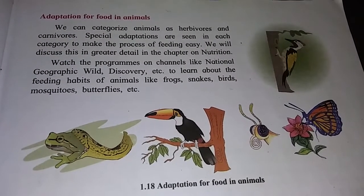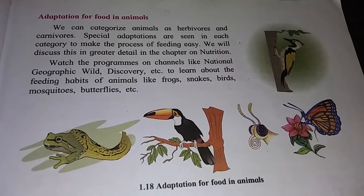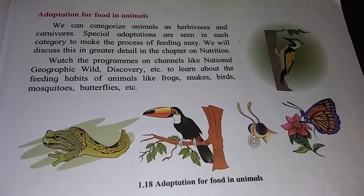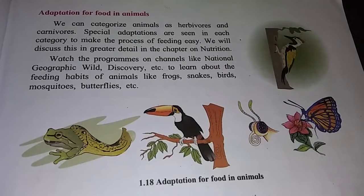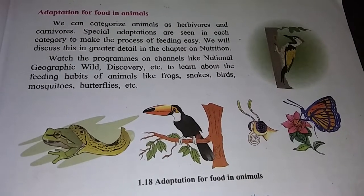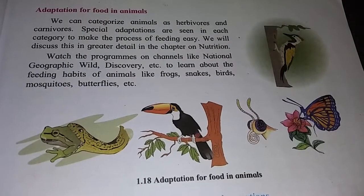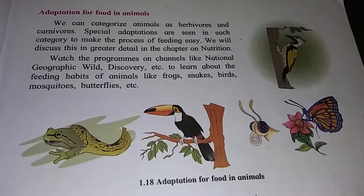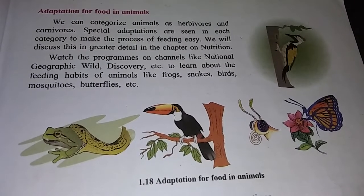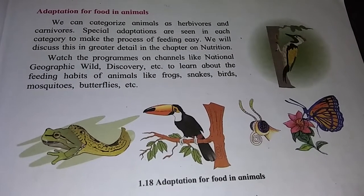Carnivores are animals that eat the flesh of other animals. Their front teeth are long, pointed, and curved, and are used for holding and tearing the prey's flesh. For example, lion, tiger, dog, and cat.